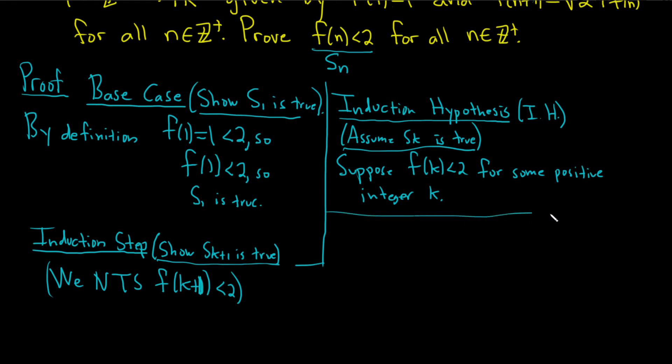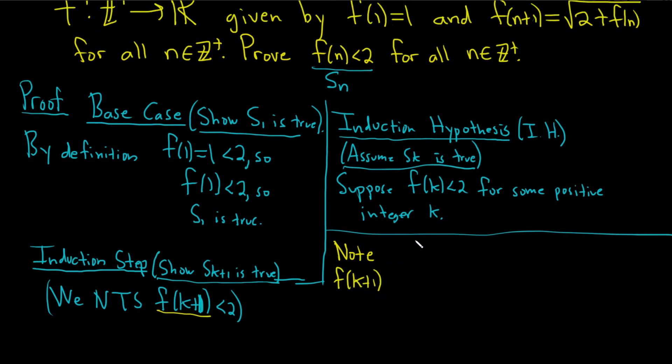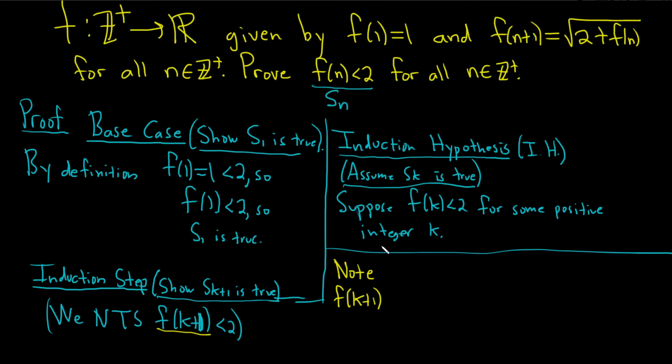Let's do it. I'm going to do it over here. I'm going to switch colors for clarity. So note, let's start with this side, f(k+1). And we need to use something else that's not on the screen. How about our definition, our part of our recursive definition? So this is equal to the square root of 2 plus f(k). This is by definition of our function.